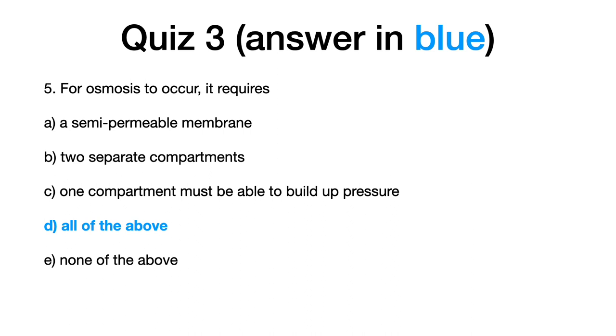Five, for osmosis to occur, it requires all of the above, that is, a semi-permeable membrane, two separate compartments, and one compartment must be able to build up pressure.